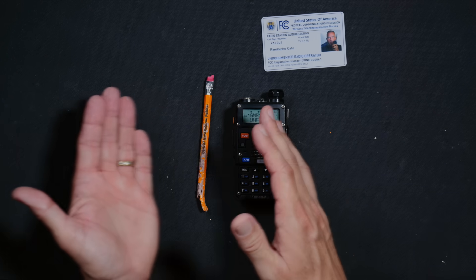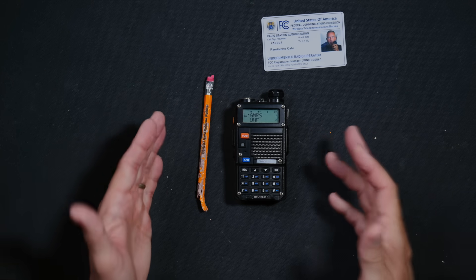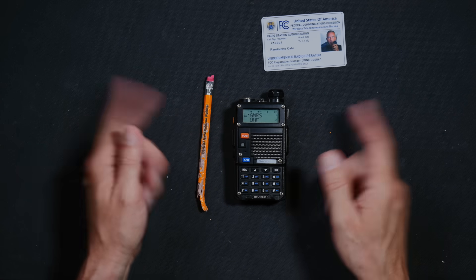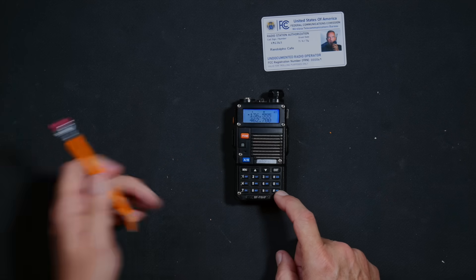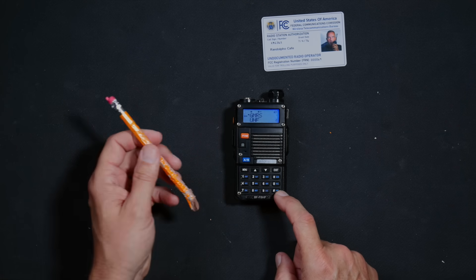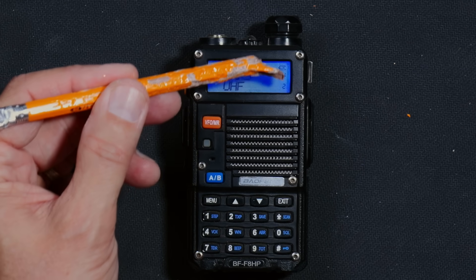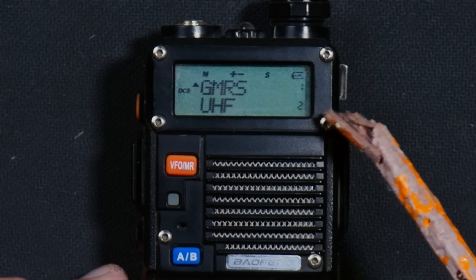There are only two modes, channel mode and VFO mode, so you already have a 50-50 chance of the radio already being in VFO mode. And here is how you can tell which mode your radio is in. When the radio is in channel mode, you will see tiny channel numbers on the right of the screen. As you can see here is illustrated by channel number one on the top and channel number two on the bottom.